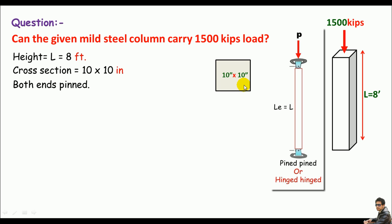Now the data makes sense. Let's do some solutions. The question is clear and straightforward: can the given mild steel column carry 1500 kips load? I'll check the column for compression and then check for buckling.